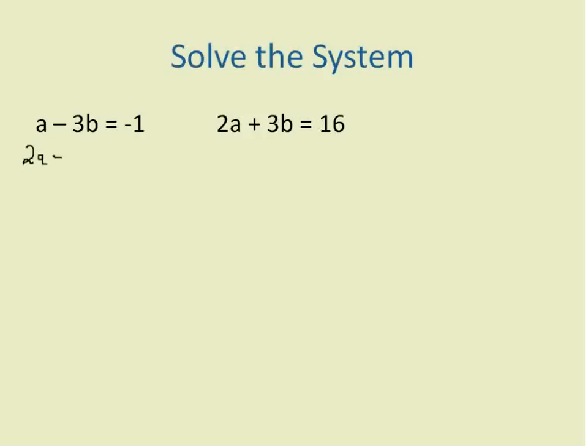2a plus 3b is equal to 16. And I'm going to add these two equations because adding will get rid of, when I add a positive to a negative here, I'll end up with 0. That's what I'm looking for. A plus 2a gives me 3a. Negative 3b plus 3b gives me 0. And negative 1 plus 16 gives me 15.